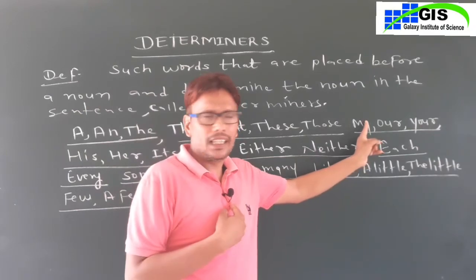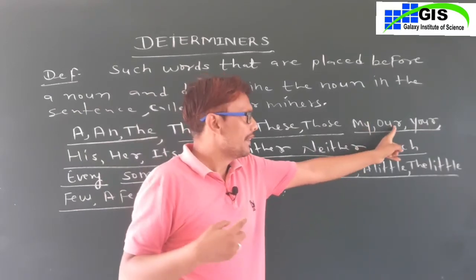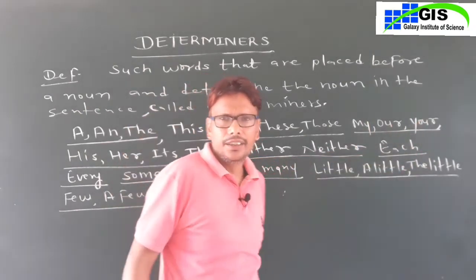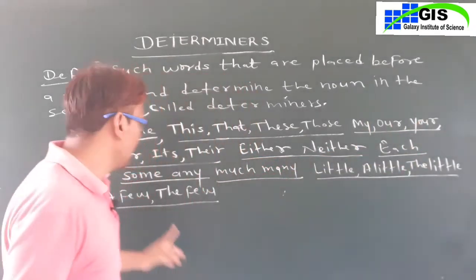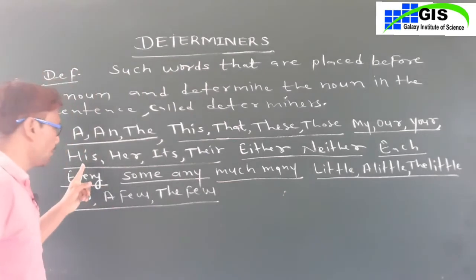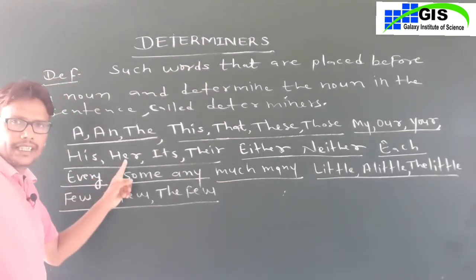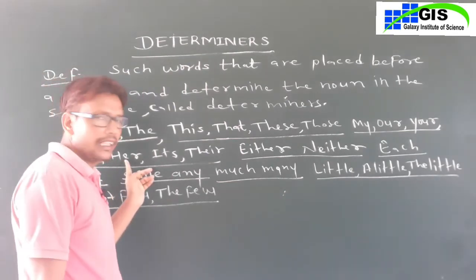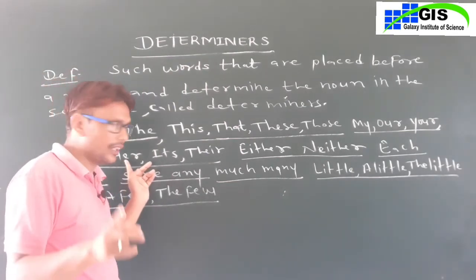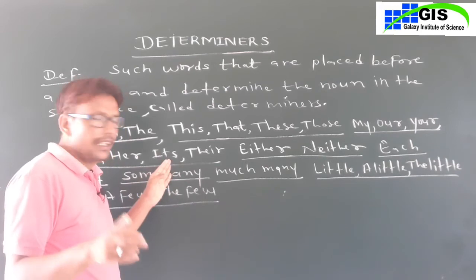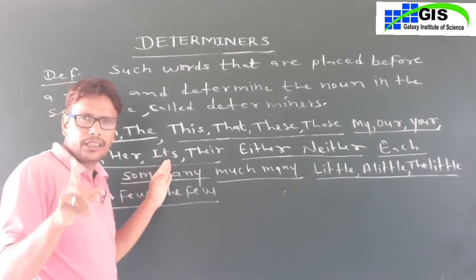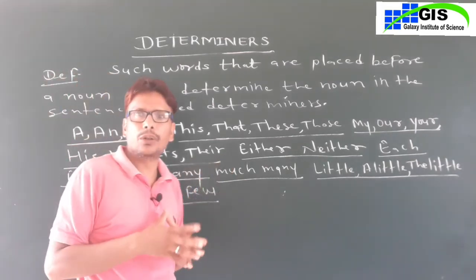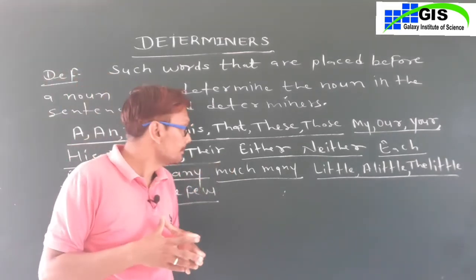Possessive Determiners: mere ke liye — My; hamare ke liye — Our; tumhare ke liye — Your; us ke liye (purush) — His; har ke liye (stri) — Her; ek vachan nir-jiv vastu, peed-pauda ke liye — Its; bahuvachan ke liye — Their.